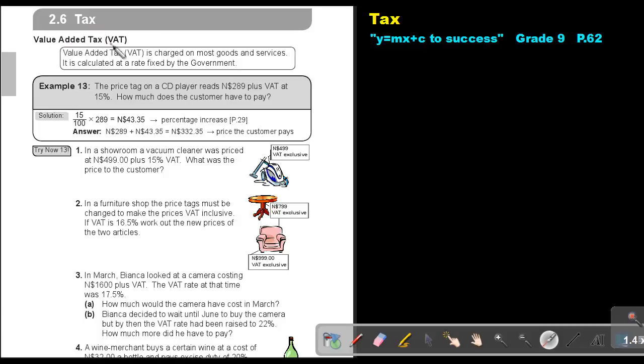Value Added Tax. Value Added Tax is charged on most goods and services. It is calculated at a rate fixed by the government. In Namibia at this stage we pay a 15% value added tax.